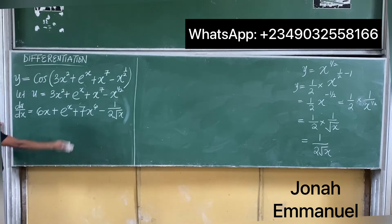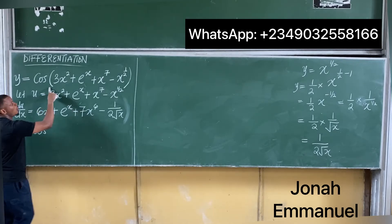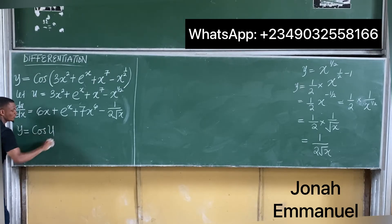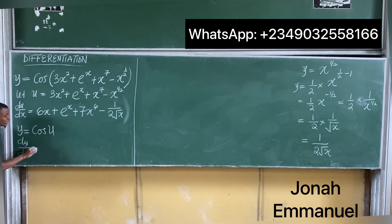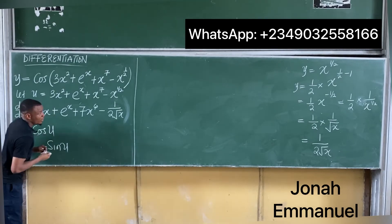So that gives us the du over dx. Next, y is equal to cosine of all of this, which we said equals u. So y becomes cos u. Differentiating y with respect to u, we have dy over du equals negative sin u.